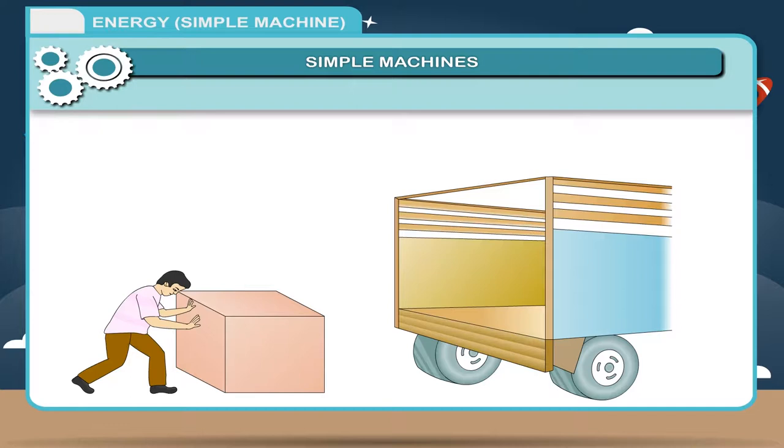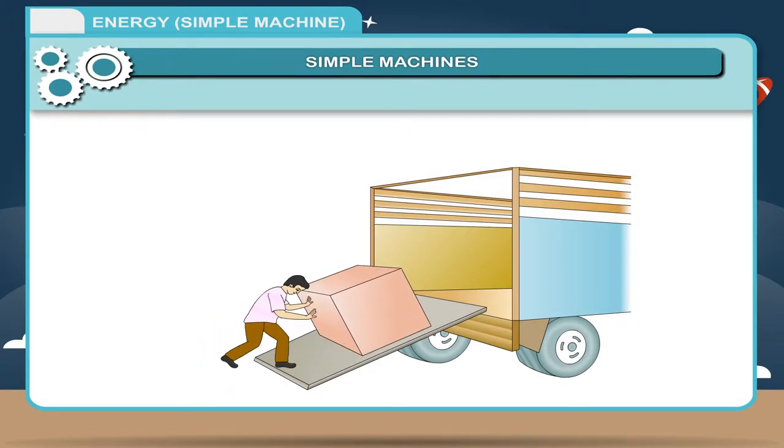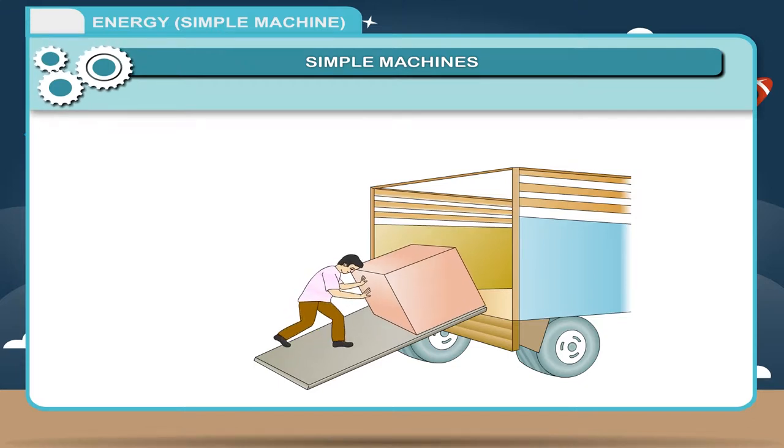Similarly, a man has to apply a great force to lift a box to put it into the truck, but he can push the same box up using an inclined plane very easily. The amount of work done in both cases is the same, but the inclined plane allows the man to apply less force. Hence, the inclined plane works as a simple machine.